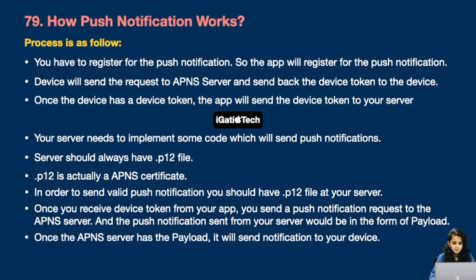Question number 79: How do push notifications work? This is also one of the favorite questions of interviewers. The process is as follows: the app registers for push notifications, the device sends a request to the APNS server, which sends back a device token to the device. Once the device has a device token, the app sends that token to your server. Your server needs to implement some code which will send push notifications.